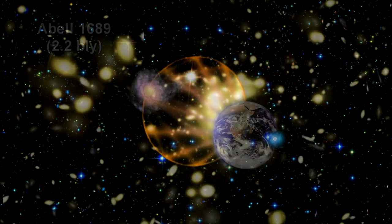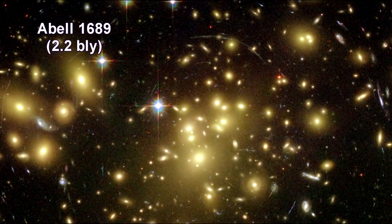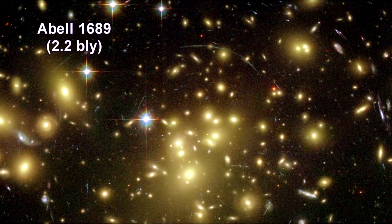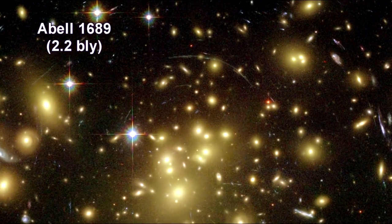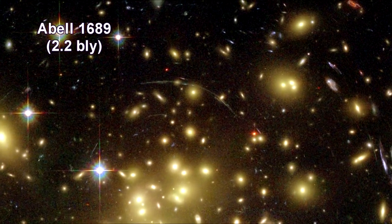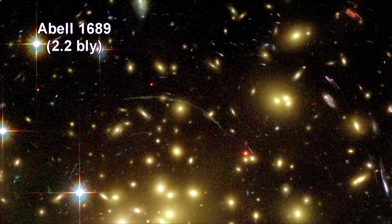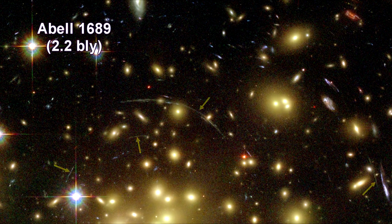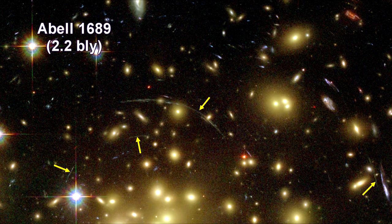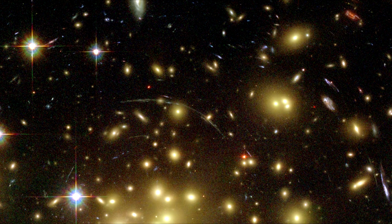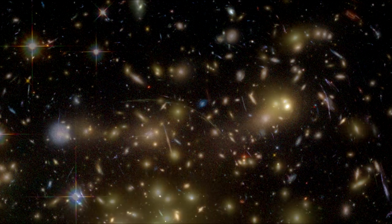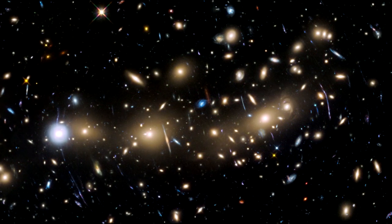This is Abel 1689, 2.2 billion light-years away. It's one of the most massive galaxy clusters known. The gravity of its trillion stars plus dark matter acts like a 2 million light-year wide lens in space.